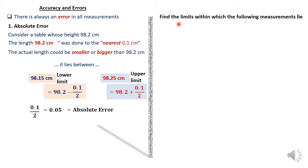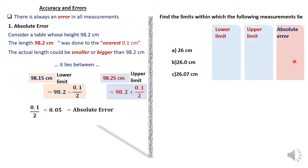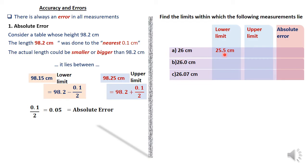Now we find the limits within which some measurements lie, to make this clearer. We are given three measurements: 26 centimeters, 26.0, and 26.07. For 26 centimeters, the lower limit is 25.5 because it's measured correct to the nearest whole number. The upper limit is 26.5, and the absolute error is 0.5, which is 1 divided by 2 — added to or subtracted from 26 to get the upper and lower limits respectively.